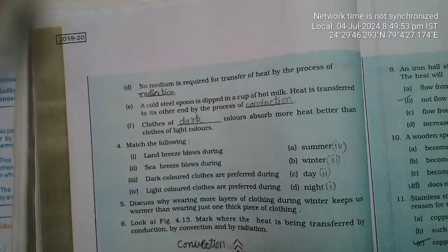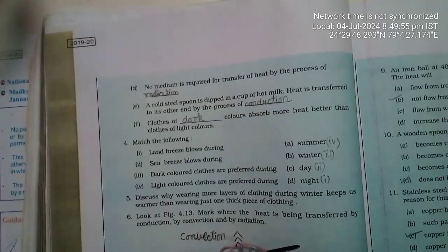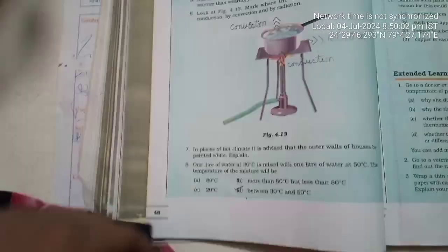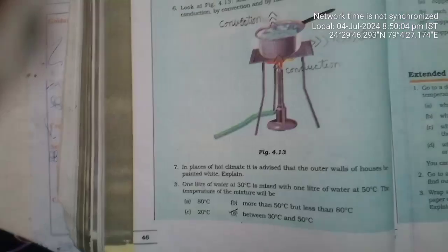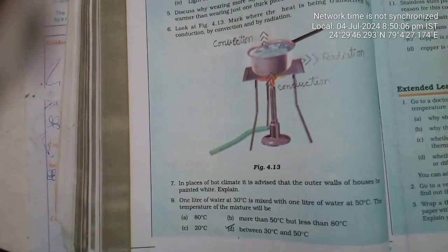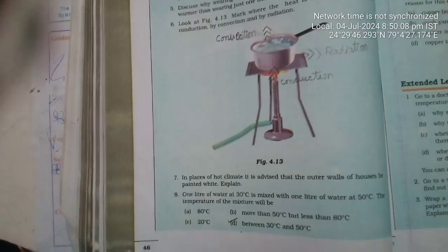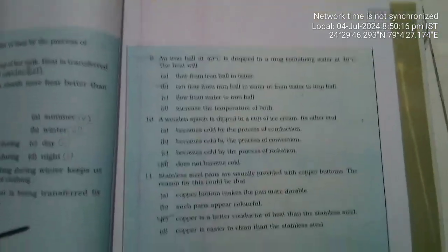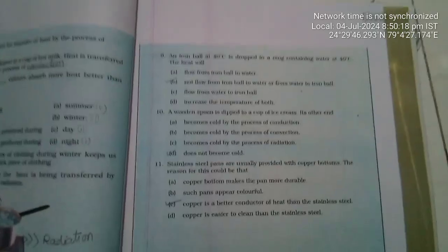Next answers: Conduction, Dark. Match the Following answer type: Conduction, Radiation, Convection. Question 6, Question 8, answer D. Questions 9, 10, 11: 30 degrees Centigrade and 50 degrees Centigrade, answer B, answer D, answer C.